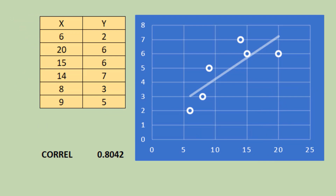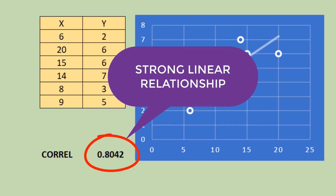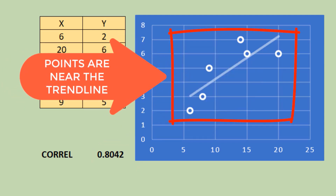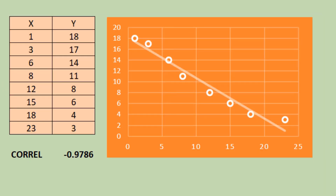Our two variables, Richardson Development and Revenue Growth, have a correlation coefficient of 0.042, which is near the absolute value of 1, meaning the two variables have a strong linear relationship. The scatterplot also shows points near the trend line. This table shows a correlation coefficient of negative 0.9786.